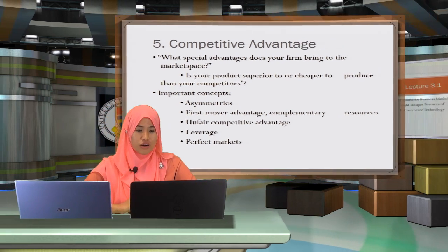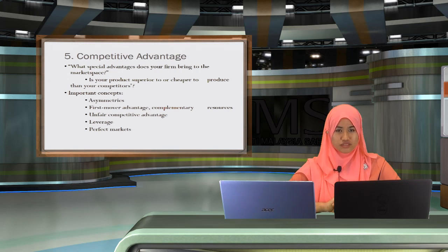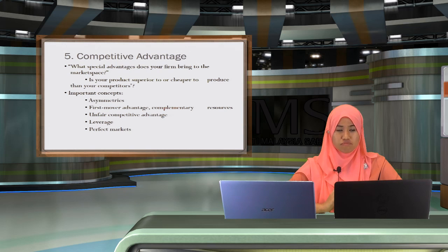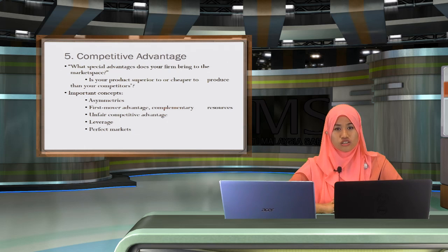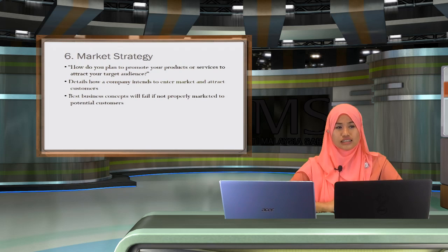The fifth element is competitive advantage — what special advantages does your firm bring to the market space? Is your product superior to or cheaper to produce than your competitors'? There are important concepts such as asymmetry, first mover advantage, complementary resources, and competitive advantage leverage in perfect markets.